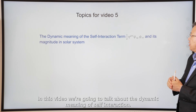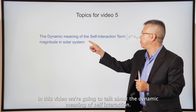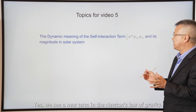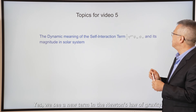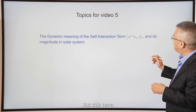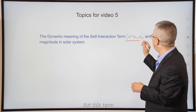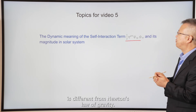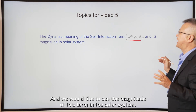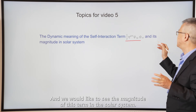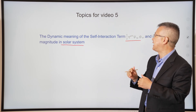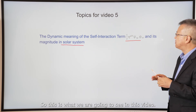In this video, we're going to talk about the dynamic meaning of self-interaction. We see a new term in Newton's law of gravity that is different from the original, and we'd like to see the magnitude of this term in the solar system.